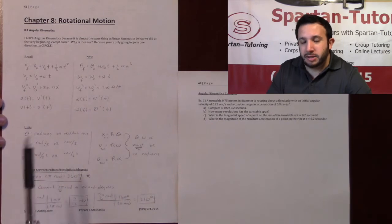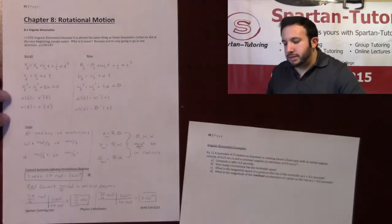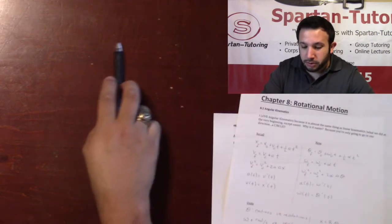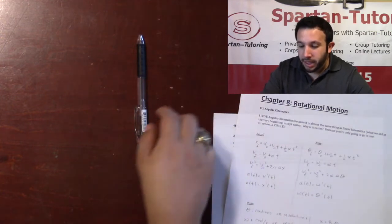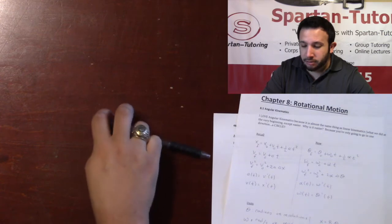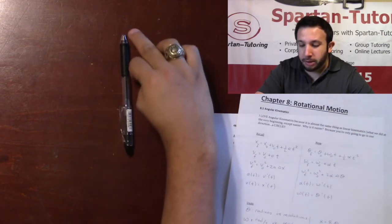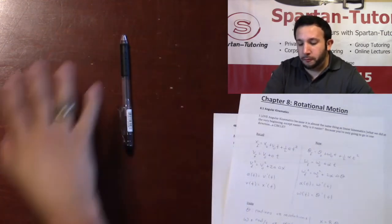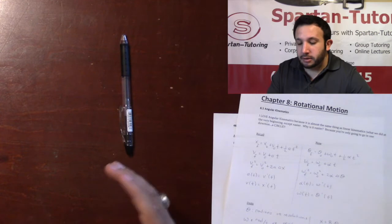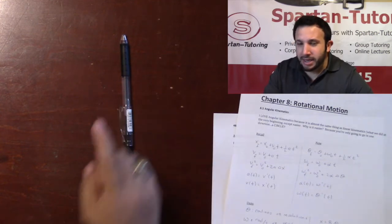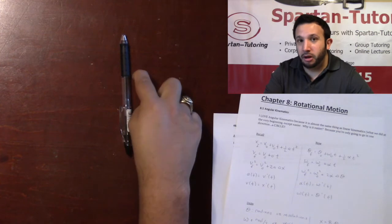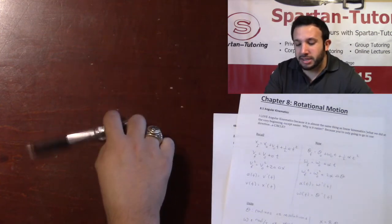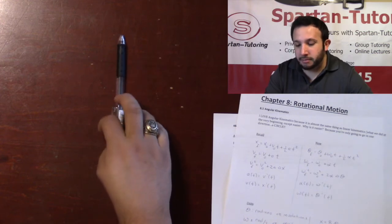It's important to understand the difference between angular and linear quantities. I want you to focus on the tip of the pin and the bottom of the black part. As I rotate this in a circle, notice how both the tip and the bottom of the black part complete one full revolution — two pi radians — in the exact same amount of time. That tells us their angular velocities are exactly the same.